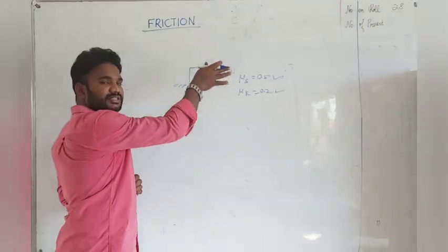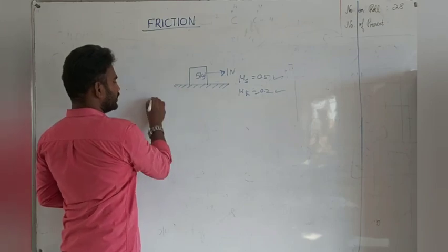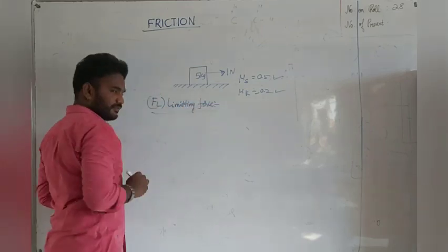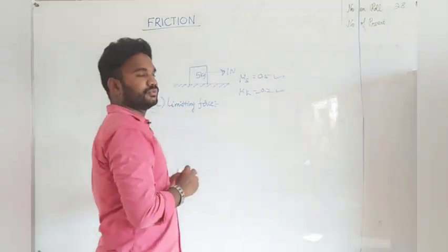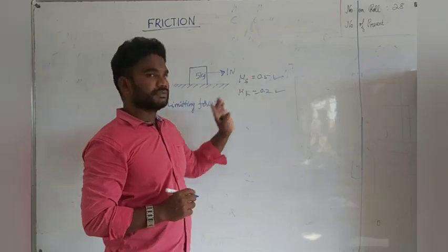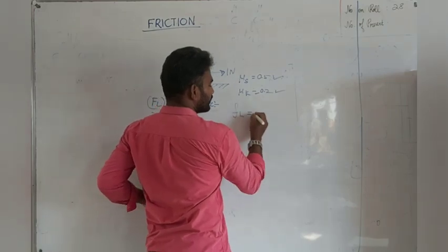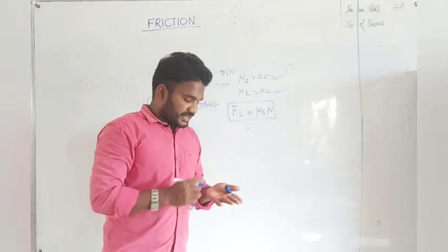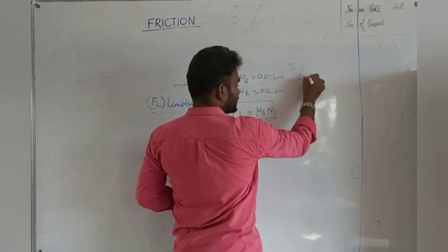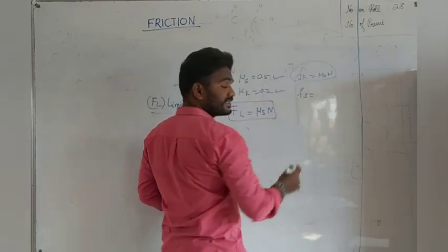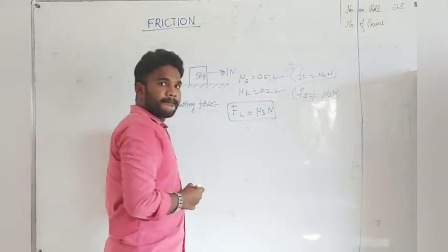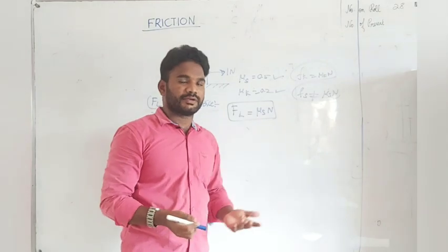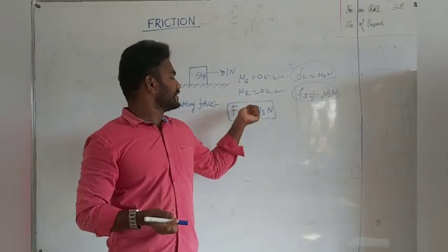The minimum force required to move an object on a particular surface is called the limiting force (FL). The formula for limiting force is FL equals μs into normal force. This is not static friction itself. Kinetic friction Fk equals μk into normal force. But the product of μs and normal force gives FL — the limiting force, also called limiting friction in some textbooks. Based on this, we can determine whether the block is moving or not.